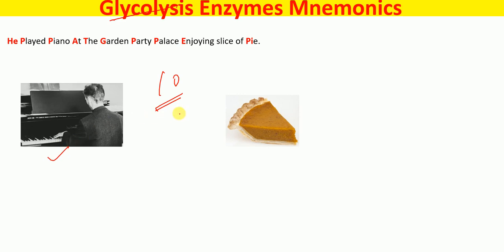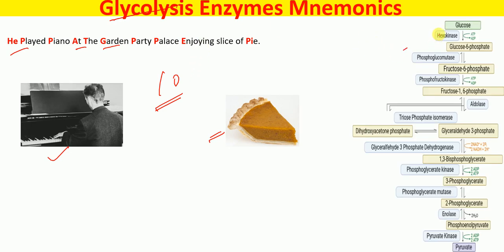The picture to remember is a guy playing the piano and a slice of pie. The mnemonic is: 'He played piano at the garden party palace enjoying slice of pie.' He — HE for hexokinase, played P for phosphoglucomutase, piano P for phosphofructokinase, at A for aldolase, the T for triose phosphate isomerase, garden G for glyceraldehyde-3-phosphate dehydrogenase.